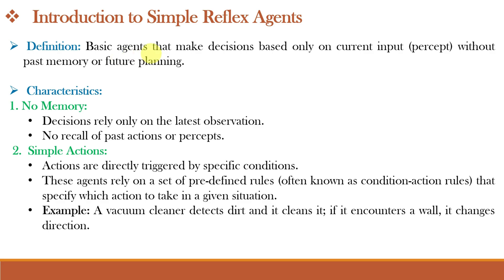Simple reflex agents are the most basic type of agents that decide what to do based only on what they see right now, without thinking about what happened before or what might happen next. They don't have any memory — they don't remember anything from the past. They only focus on what they sense at the current moment, ignoring past situations or actions. Their decisions are always based on the latest input they receive. They also have direct, simple actions — a set of fixed rules they follow to respond to specific situations, also called condition-action rules.